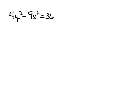We want to find the center, vertices, foci, and asymptotes of the hyperbola 4y squared minus 9x squared equals 36.